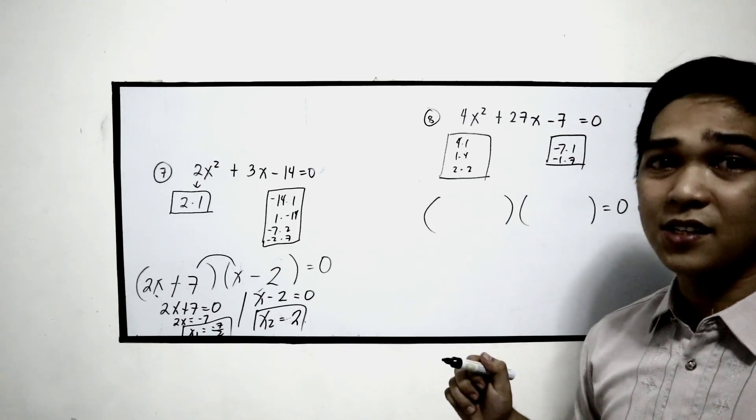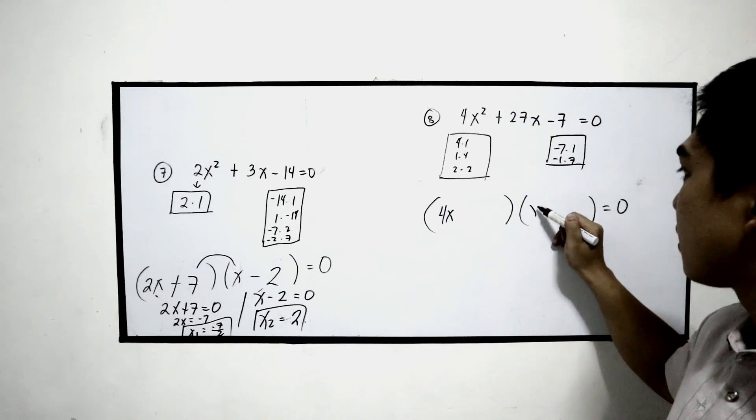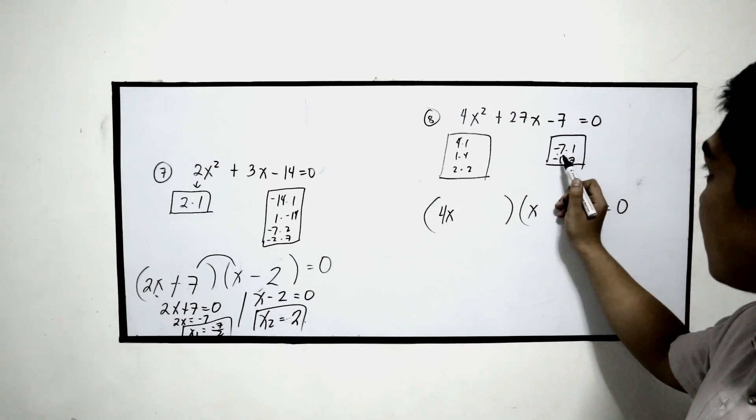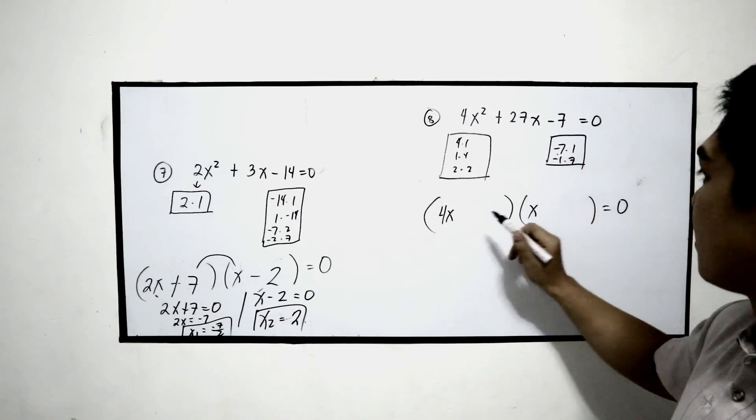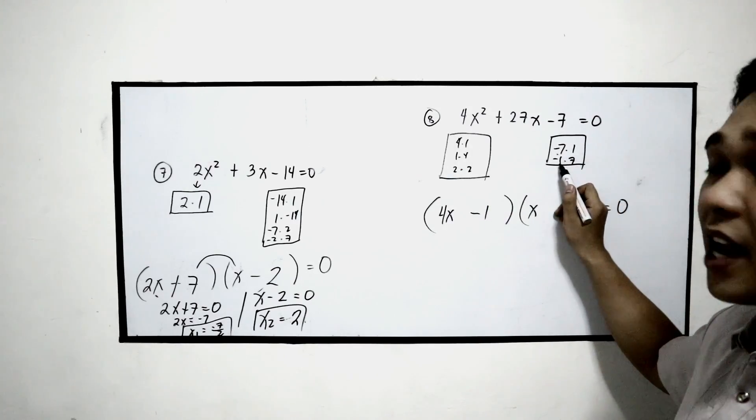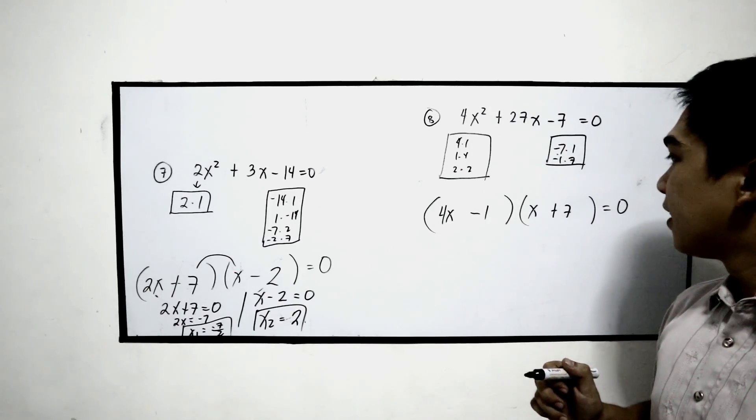So first, let us try 4x times x. And in this case, I will choose negative 1 times 7, plus 7.